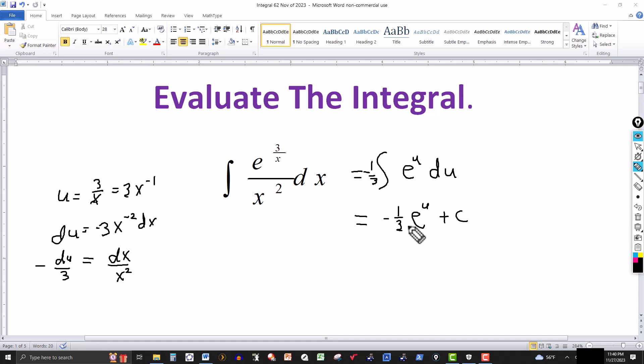And then never leave your answer in terms of u, always go back to the original variable, which is in this case x, so it's negative one third, and then it's e, and then the u is replaced by 3 over x, plus the constant of integration, and that's your answer.